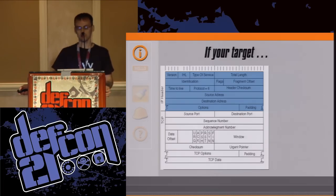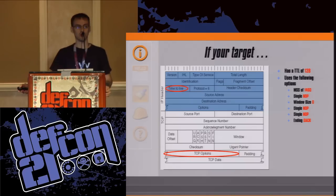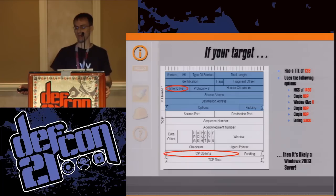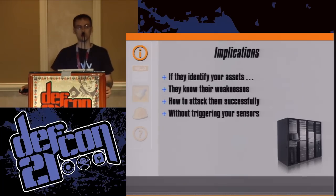If your target has a TTL of 128 and uses the following options — maximum segment size of 1460, followed by a single NOP, Windows scale of zero, followed by two NOPs and ends in a SACK — then your target is likely a Windows 2003 server. If they identify your assets, they know their weaknesses and how to attack them successfully without triggering your sensors. Precision, basically.